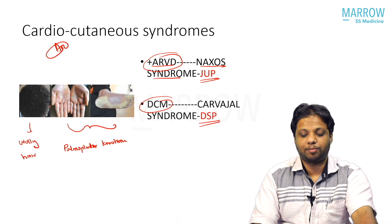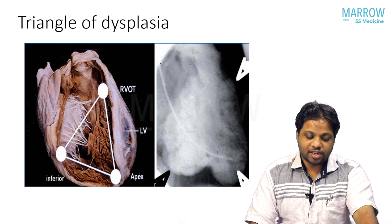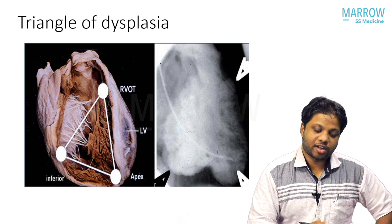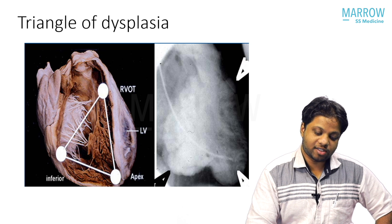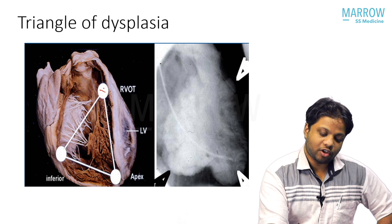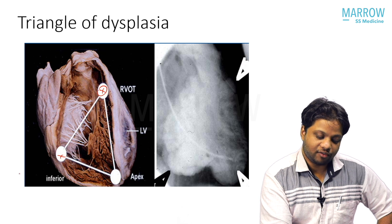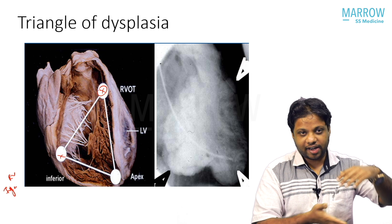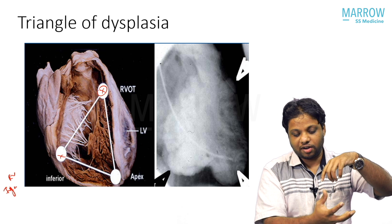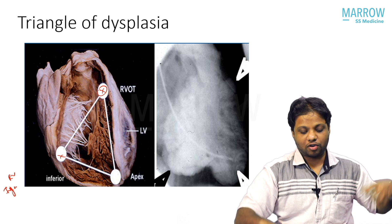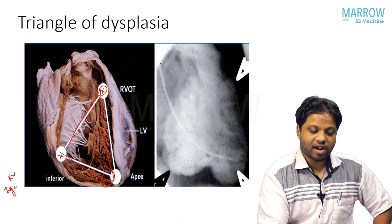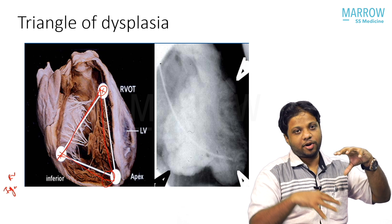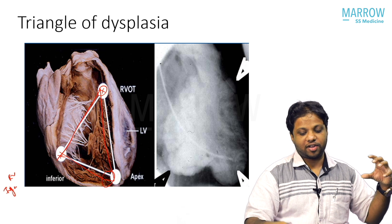ARVD itself is very important. There is a traditional triangle of dysplasia — for years this was considered the most common site, defined by one end at the RVOT, another at the RV inflow (just below the tricuspid valve), and the RV apex. This was the traditional triangle of dysplasia.